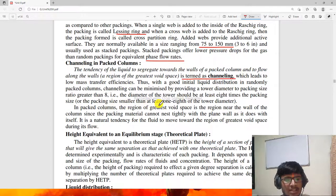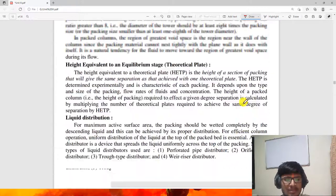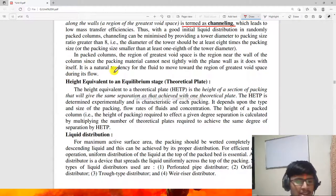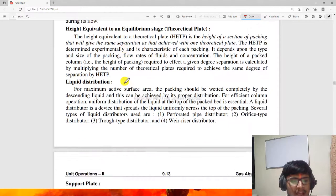In packed columns, the region of greatest void space is near the wall where the packing material cannot nest tightly against the plain wall. Thus, there is a natural tendency for the liquid to move towards the region of greatest void space during flow.